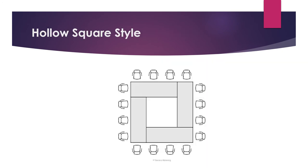The hollow square style is used for meetings or conferences. Rectangular tables are clubbed together with a hollow space in the centre, so that everyone sitting can see each other. Some banquet halls place plantation in the centre, but care must be taken that it is not too high, as otherwise eye contact becomes difficult.